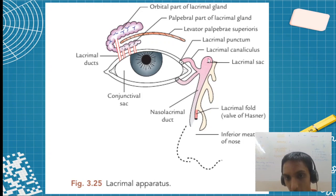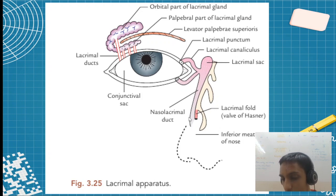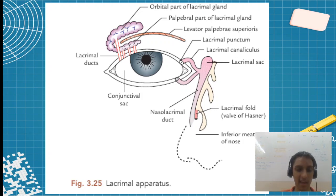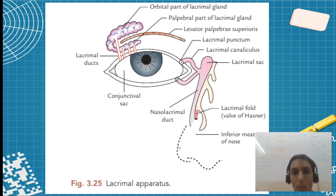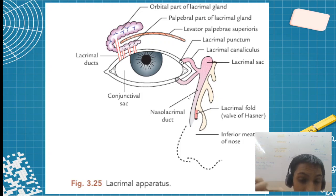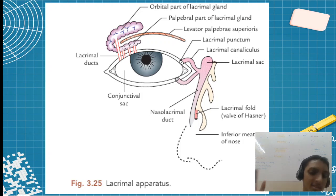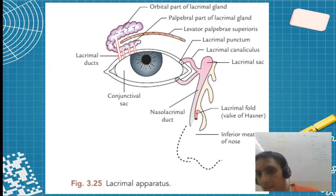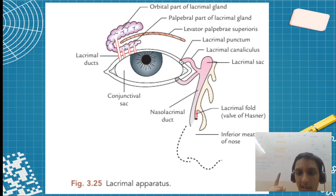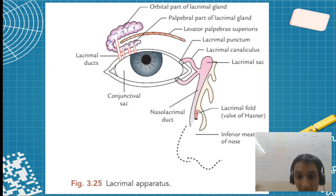The lacrimal fluid flows from the punctum, canaliculus, to the sac, then through the nasolacrimal duct and through the inferior meatus of the nose. The lacrimal fluid — when we are crying, like you might have observed small babies — they will use this so much, the lacrimal gland. There is also something called the accessory lacrimal gland, or Krause glands (K-R-A-U-S-E). This will only be effective when the entire lacrimal gland is dysfunctional — when the entire lacrimal gland stops working, we have this backup. That is the accessory lacrimal gland.